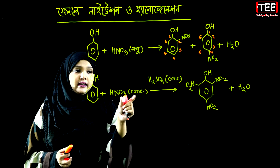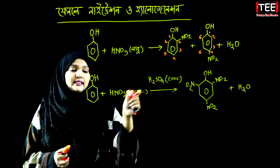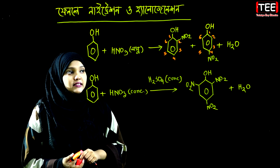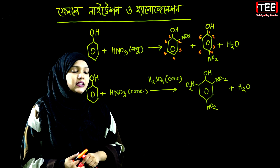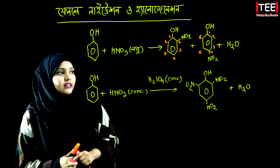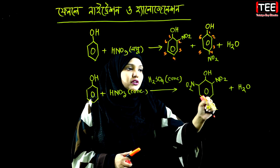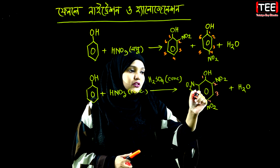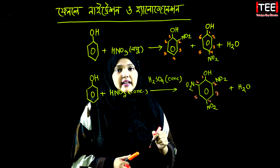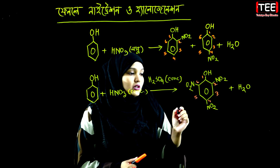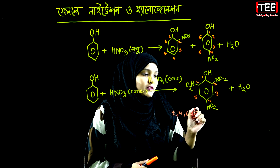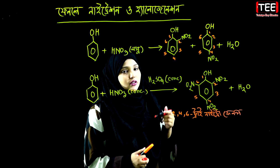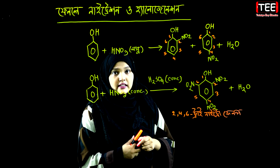We can see that phenol reacts with nitric acid and sulfuric acid — sulfuric acid can be used as well. In this case, we can see positions 2, 4, and 6. So 2,4,6-trinitrophenol is available. The name of this compound is 2,4,6-trinitrophenol.